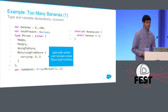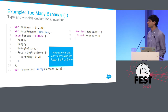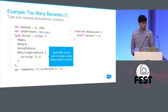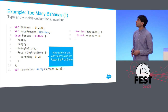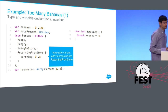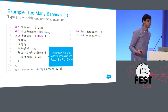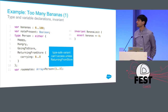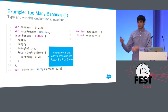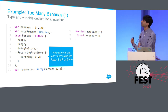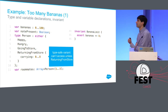Here's the too many bananas code, the correct version with a note. The state variables: bananas is an integer, note is a Boolean, and a person can be happy, hungry, going to the store, or returning from the store. If you're coming back from the store you have some number of bananas, and the system ensures you can't access that field if you're not returning. The invariant on the right says we don't have more than eight bananas.